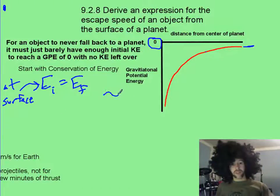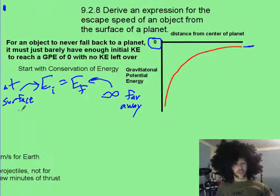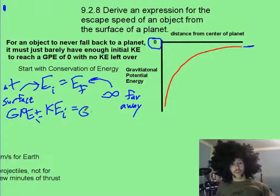Finally, at the end, it's going to be infinitely far away. And so you're going to start with your GPE initial plus your kinetic energy initial, and you're going to end up with the same thing, GPE finally plus kinetic energy.